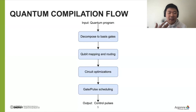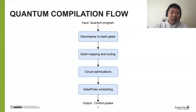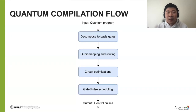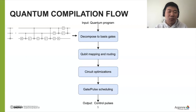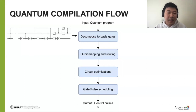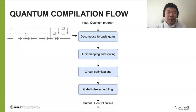Given an input quantum program, the first step is that the compiler will decompose all gates to the basis gate set. One example: we have the Toffoli gate, but it's not supported by the target hardware. So we run a decomposition that decomposes this Toffoli gate to basic gates, including CNOTs and single-qubit rotations. That's the gate decomposition step.